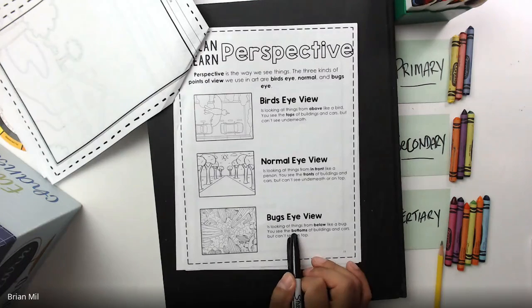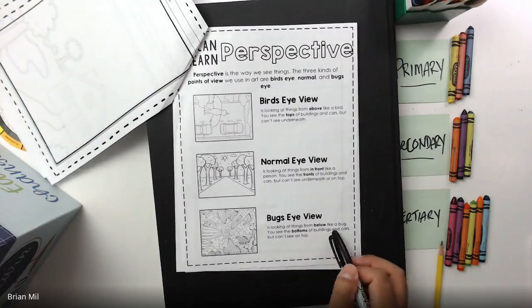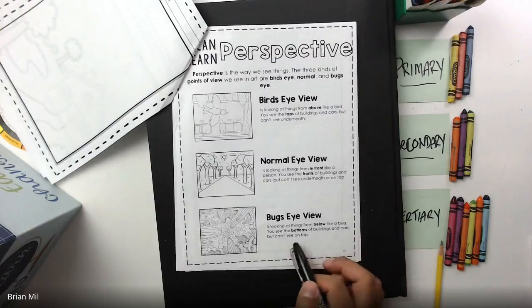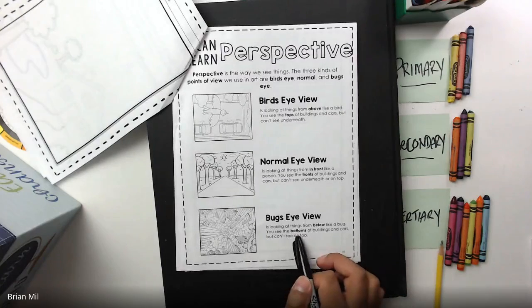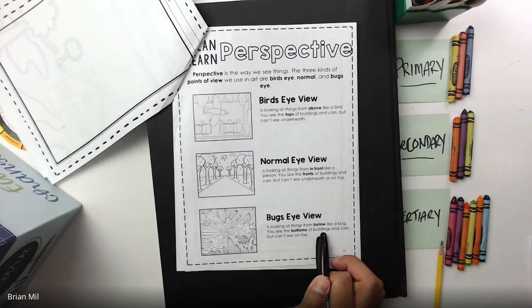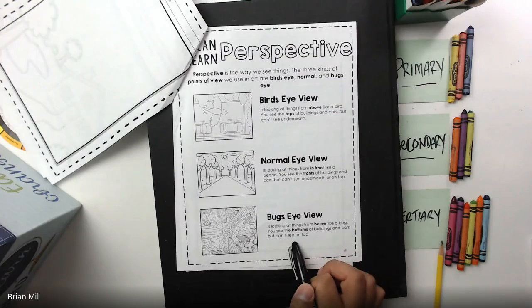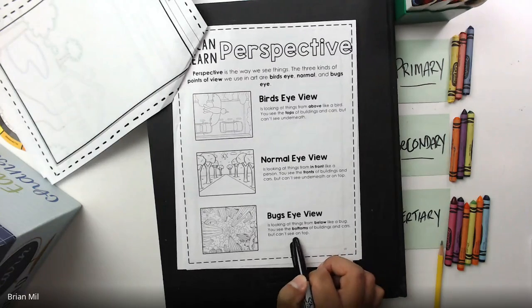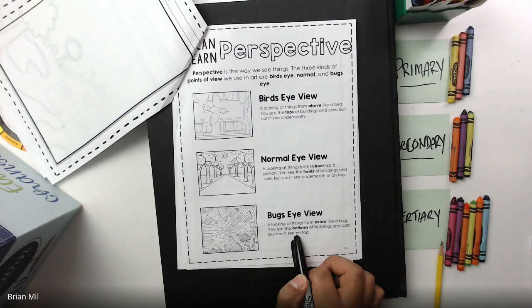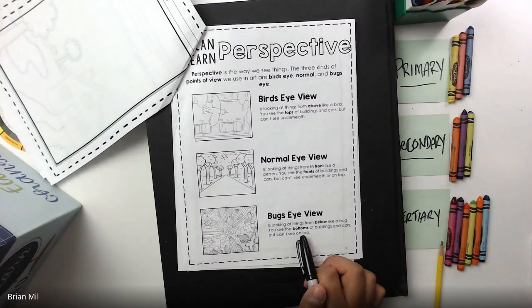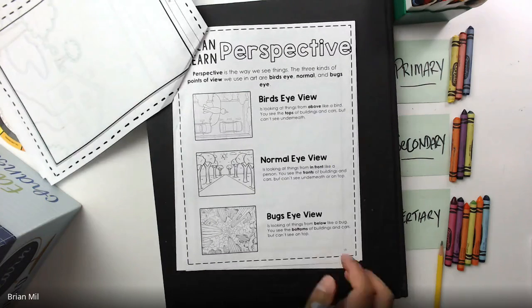The last one is called bug's eye view. This is when you're looking at things from below, like a bug. You can see the bottoms of things but you can't see the tops. So if you're looking from the floor, or if you're laying down and looking up, that's called a bug's eye view.